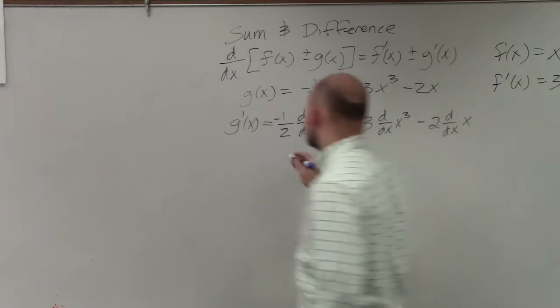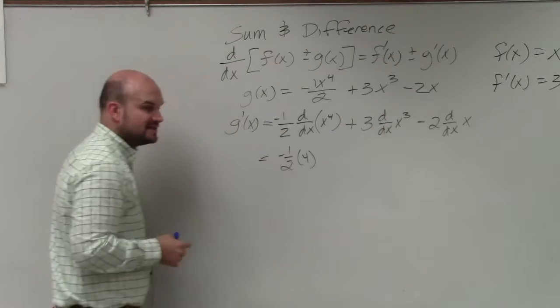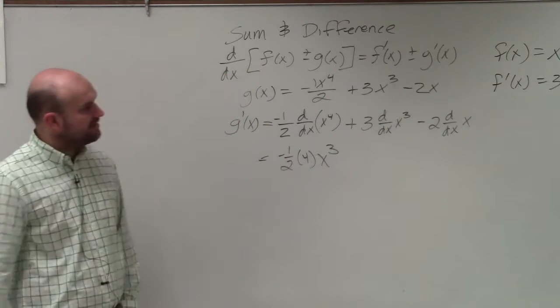So in this case what we'll have is negative one-half, bring down the 4, bring it down and then obviously we have to shake it down so that's 4 minus 1 is going to give x to the third.